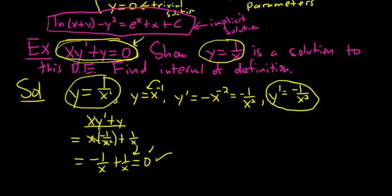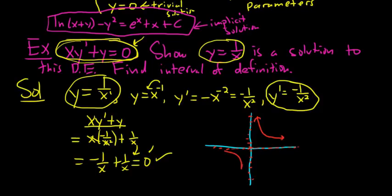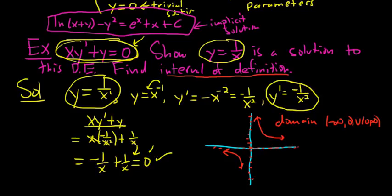Now we have to find the interval of definition. I'll graph 1 over x, which has a vertical asymptote at 0 and a horizontal asymptote at 0. The domain of this function is negative infinity to 0 union 0 to infinity — everything except 0. But that is not the interval of definition. The interval of definition is the largest interval over which the solution is defined, and a union of two pieces is not an interval.